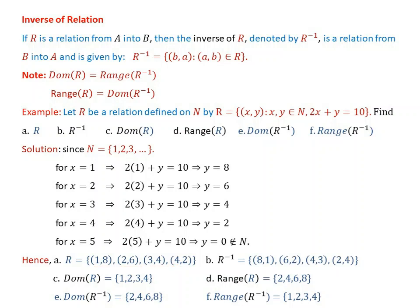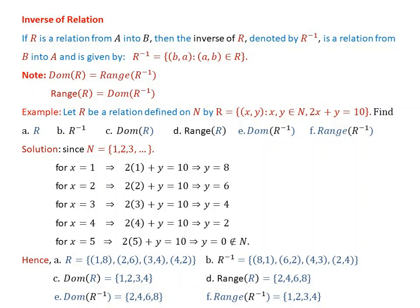Then R⁻¹ = {(8,1), (6,2), (4,3), (2,4)}. The domain of R is {1, 2, 3, 4} and the range of R is {2, 4, 6, 8}. The domain of R⁻¹ is the same as the range of R, which is {2, 4, 6, 8}. The range of R⁻¹ is the same as the domain of R, which is {1, 2, 3, 4}.